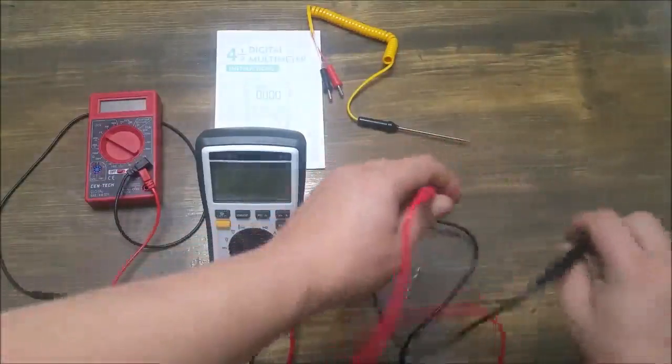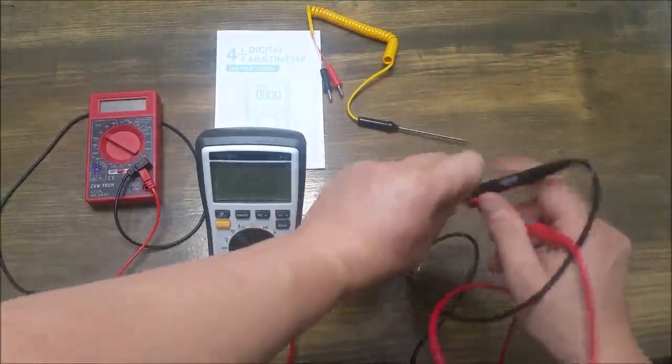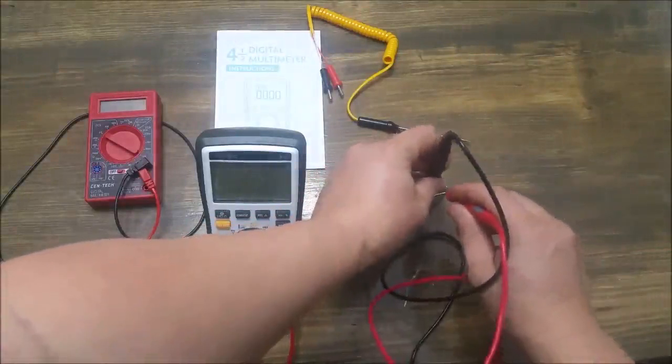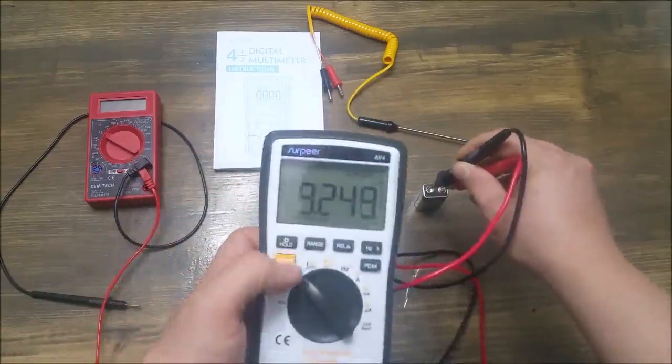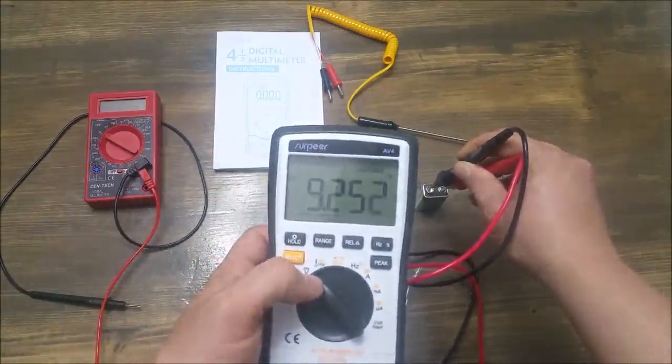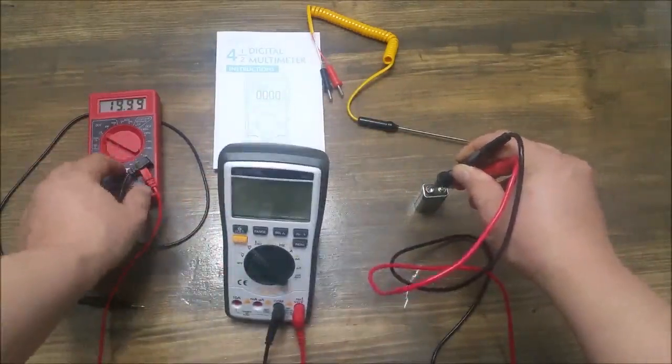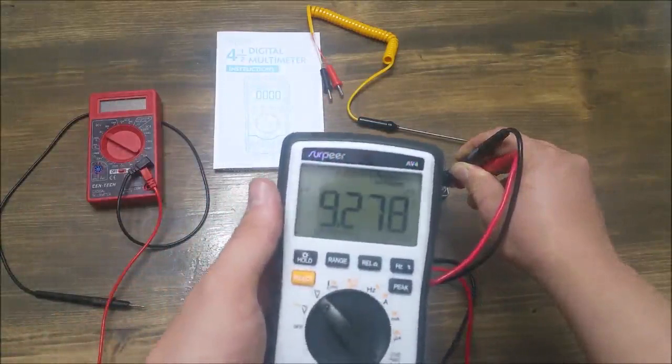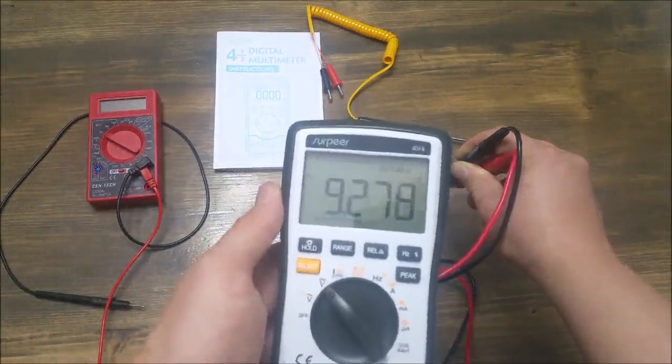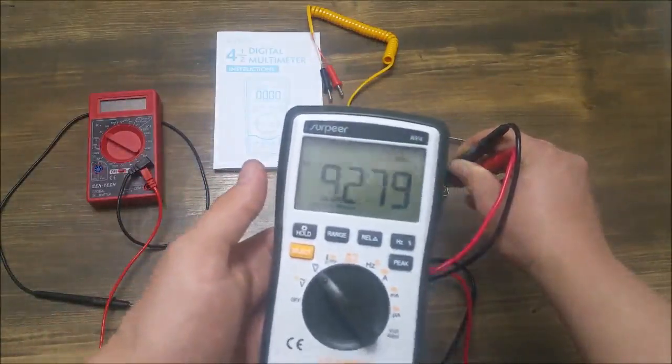And just to show you that it works, here's my little nine volt battery. We're getting 9.2. And so yeah, that was the other thing. This one here actually only goes to two decimal points, and the Syrapeer goes to three. So it's even more accurate if you need that.